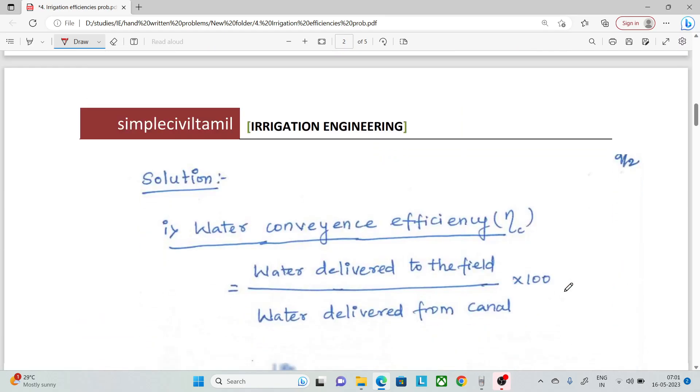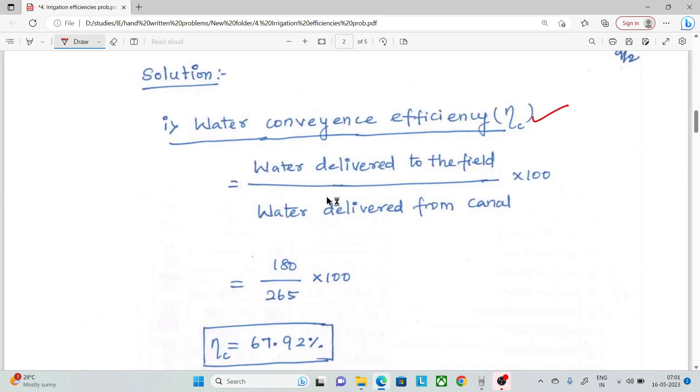First, water conveyance efficiency. When we convey the water from the canal, there is a delivery to the field. It's output by input into 100. The delivery to the field is 180 liters per second, the canal is 265. When we solve it, we have 67.92% efficiency for conveyance.